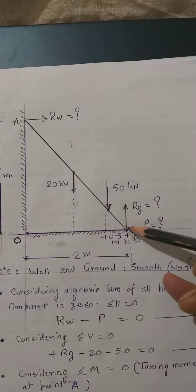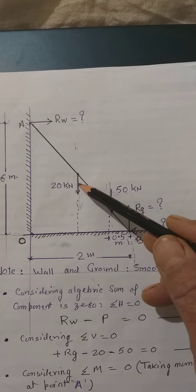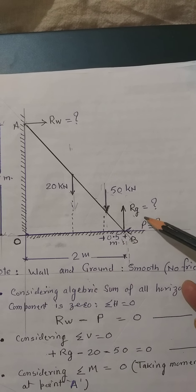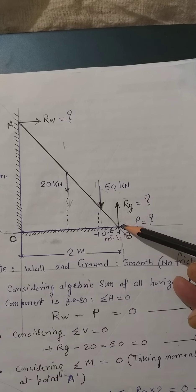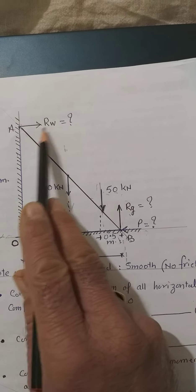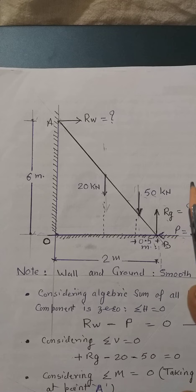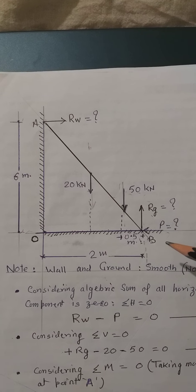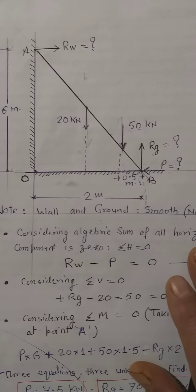Rw is the reaction of the wall, Rg is the reaction of the ground, and there are two downward forces acting here. We are supposed to find out how much horizontal force P is to be applied at this end. With three unknowns — P, Rg, and Rw — we need three equations: sigma H, sigma V, and sigma M all equal to 0.